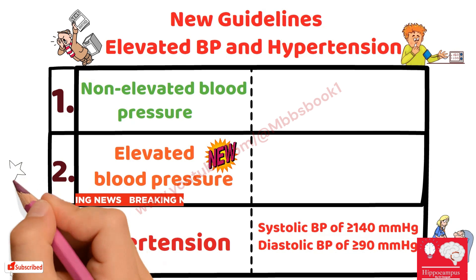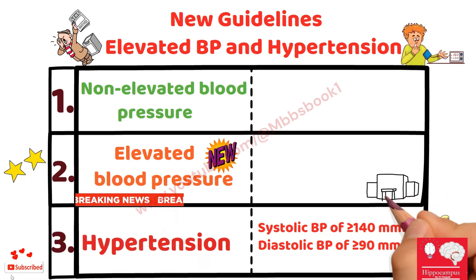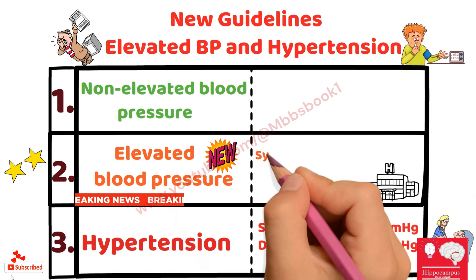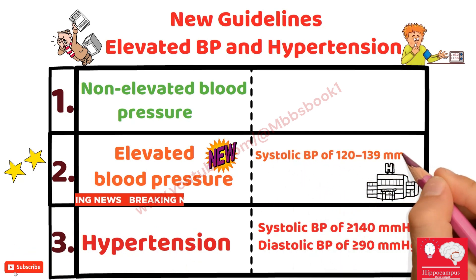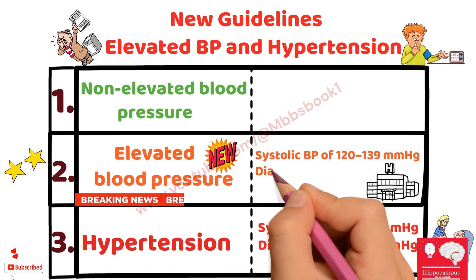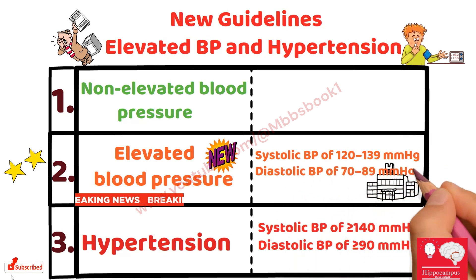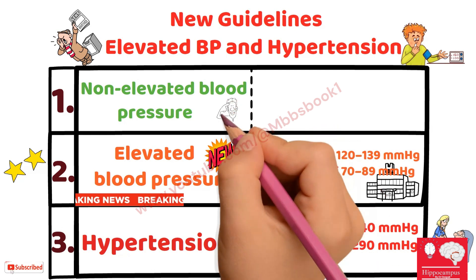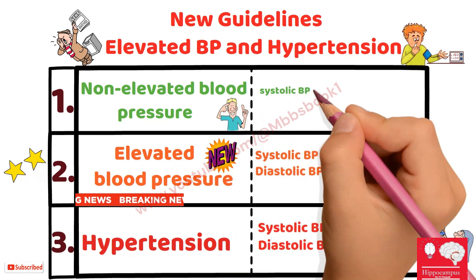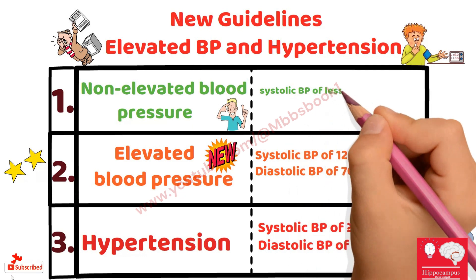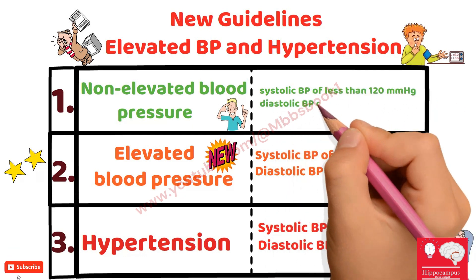However, a new blood pressure category — elevated blood pressure — is introduced. Elevated blood pressure is defined as an office systolic blood pressure of 120 to 139 millimeter of mercury or diastolic blood pressure of 70 to 89 millimeter of mercury. Non-elevated blood pressure is defined as an office systolic blood pressure of less than 120 millimeter of mercury or diastolic blood pressure of less than 70 millimeter of mercury.